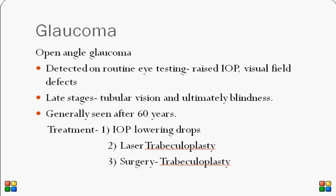The most important thing in glaucoma is regular screening. Anyone over 50 years should see an eye doctor or optician regularly to monitor for glaucoma. If anyone in the family has glaucoma, the risk increases. It is generally seen after 60 years of age. Treatment includes intraocular pressure-lowering drops such as prostaglandin analogs like latanoprost, beta blockers like timolol, dorzolamide, and other carbonic anhydrase inhibitors. The second option is laser trabeculoplasty, and the third is surgery — trabeculectomy.